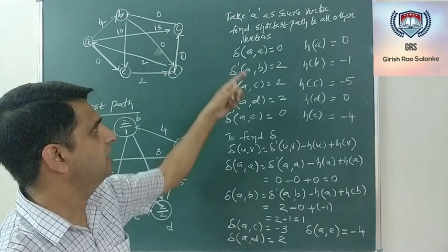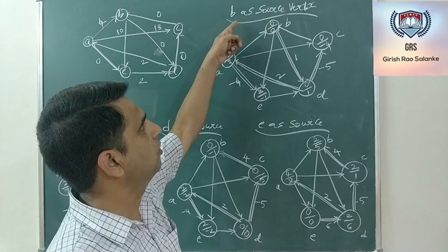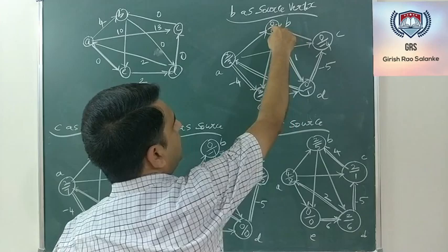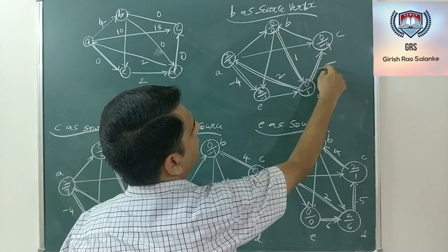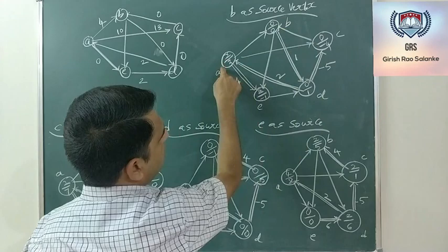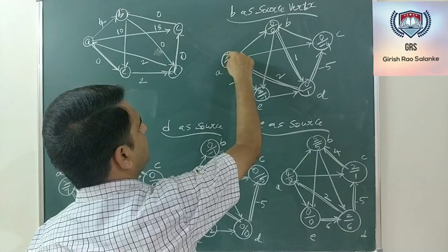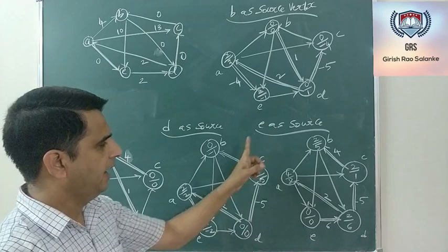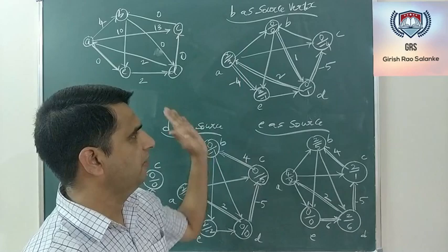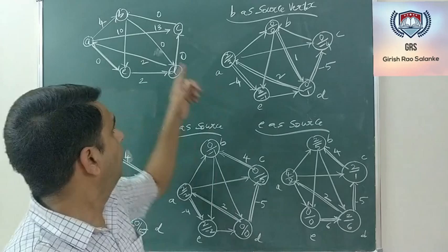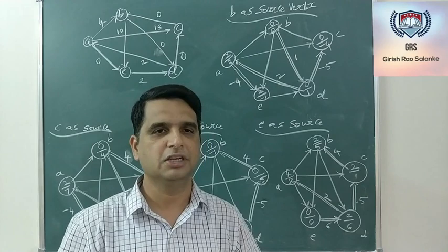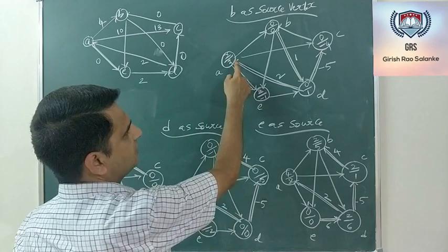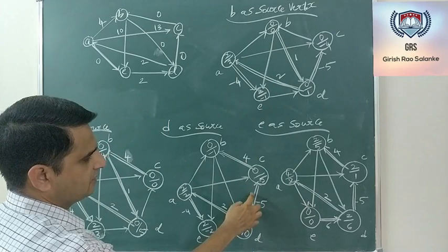The procedure remains the same for each source vertex. Running Dijkstra's algorithm on the reweighted graph for each vertex gives the actual shortest path among all vertices. The double-line notation in all these graphs indicates the edges being considered to find the shortest path.